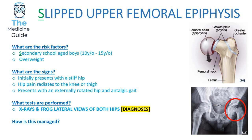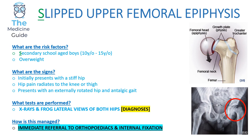Looking at the X-ray in the bottom right-hand corner, you can see how the physis has slipped off from the femoral head. The femoral head itself is quite smooth in architecture, and the physis and femoral head appear as two separated structures. Comparing to Perthes disease, where the femoral head is very irregular, crushed and fragmented — this helps discriminate between the two conditions. In terms of management, we need to immediately refer to orthopaedics and internal fixation is required.